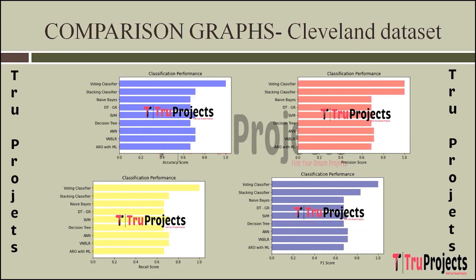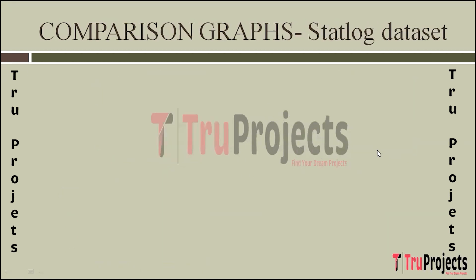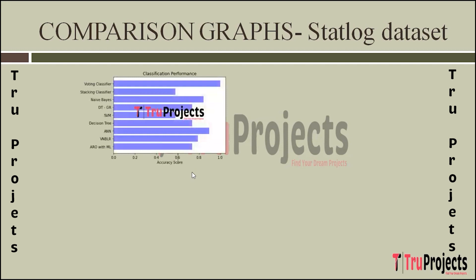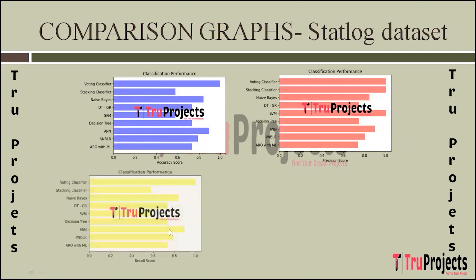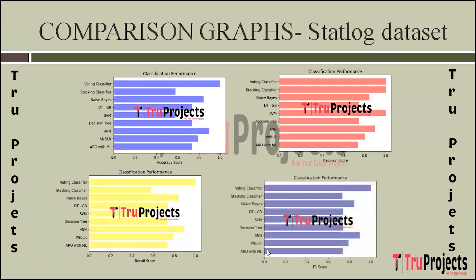The algorithm which is best performing across all performance metrics will be used for predictions. Now we'll see the comparison graphs for the StatLog dataset: the accuracy comparison graph, precision scores comparison graph, recall scores comparison graph, and F1 scores comparison graph.